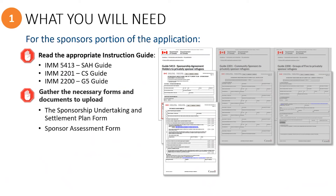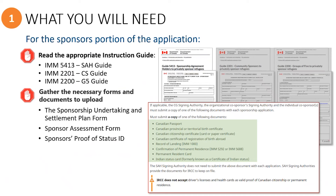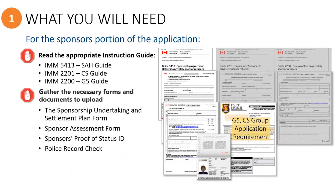A sponsor assessment form will need to be completed by each person who signs the sponsorship undertaking form, and they will also need to provide a copy of their ID proving Canadian status or permanent residence. In the instruction guide, you will find a list of acceptable ID documents. Please note that a driver's license and health card are not acceptable for proving Canadian citizenship or permanent residence. Each person who signs the undertaking form will also need to provide a copy of their police check, which cannot be older than six months from the date of application submission. A criminal record check is a minimum requirement; however, providing a vulnerable sector search version is also acceptable.